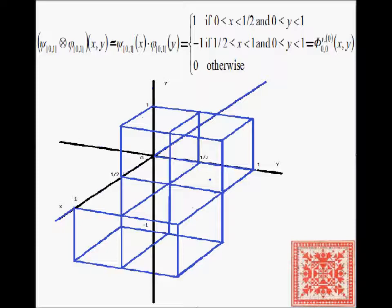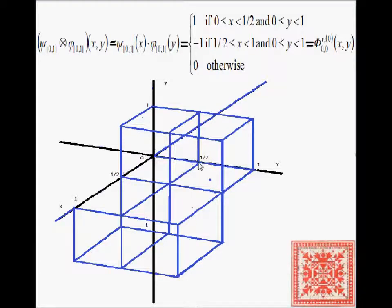Let's take a closer look at the tensor product psi superscript 0,1 and phi superscript 0,1 — the vertical change measuring from top to bottom. It takes a value of one when x is from zero to one-half and y is from zero to one, then drops to minus one when x is from one-half to one and y is from zero to one. This is the basic wavelet measuring vertical change.